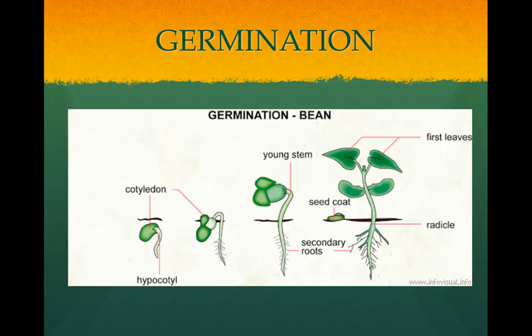Germination is when the seed takes up water. The seed expands, the seed coat ruptures, and the embryo begins to grow. Stored nutrients are digested by enzymes and feed the embryo. The root emerges first, followed by the shoot. When the shoot breaks through the ground, photosynthesis begins.